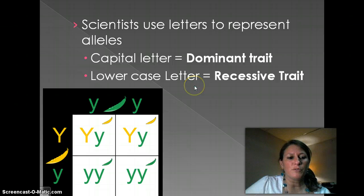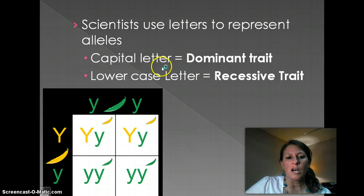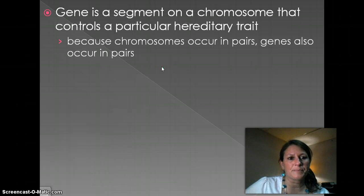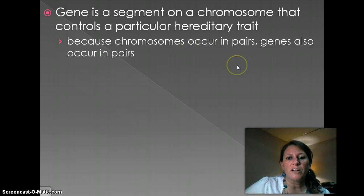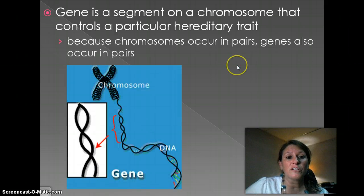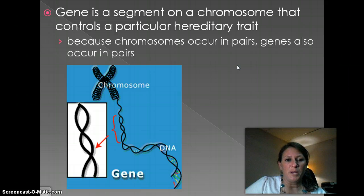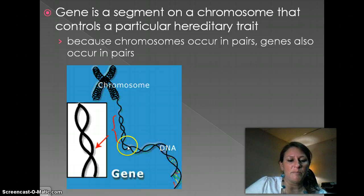Some symbols: you'll notice we use capital letters and lowercase letters. The capital letter is the dominant trait, and lowercase is used for recessive. Everything occurs in pairs — chromosomes occur in pairs, genes occur in pairs, alleles occur in pairs. So here's my chromosome, here's my DNA — my twisted double helix — and here is a segment of a gene.